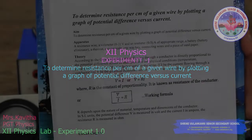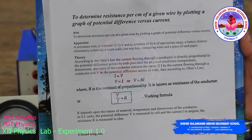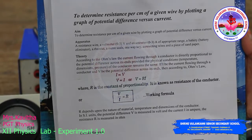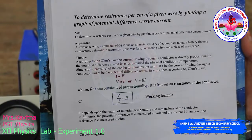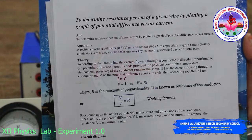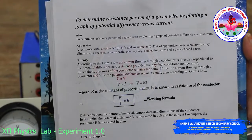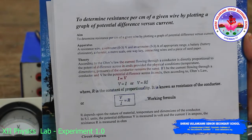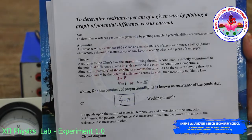Hello children, welcome to a practical session of physics. Experiment number one: to determine resistance per centimeter of a given wire by plotting a graph of potential difference versus current. The aim of the experiment is to determine resistance per centimeter of a given wire by plotting a graph of potential difference versus current.